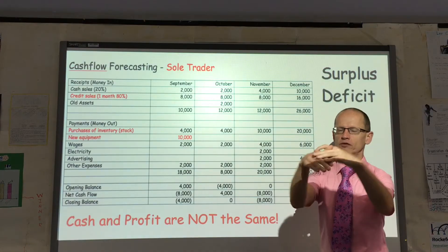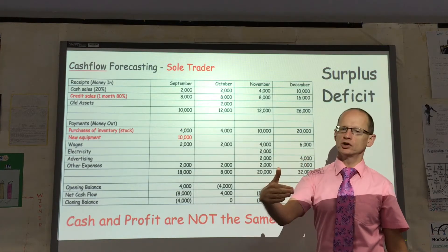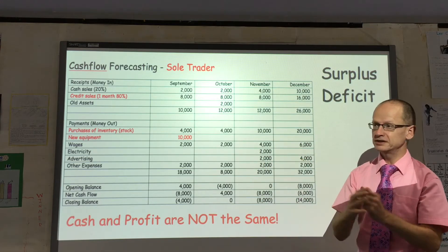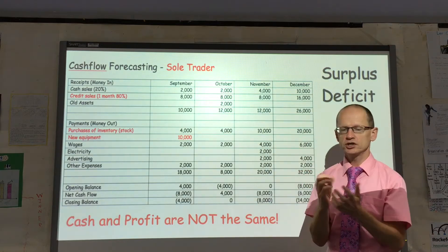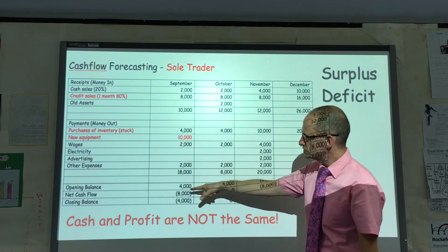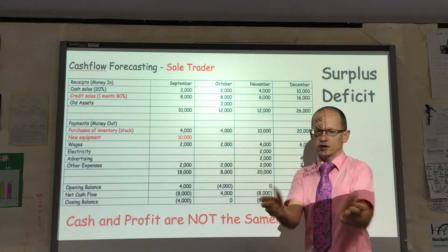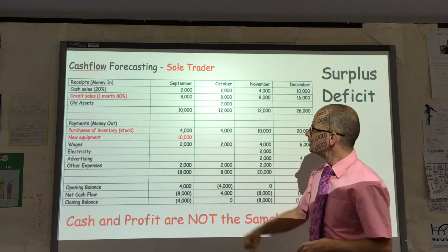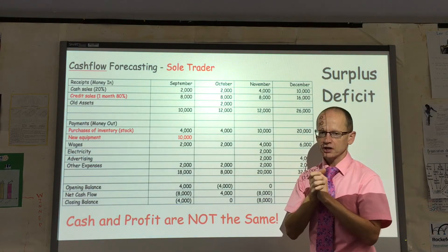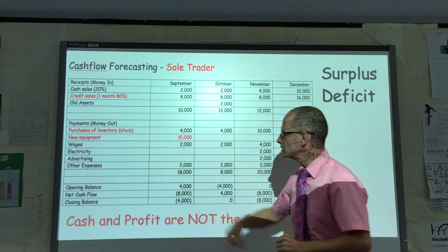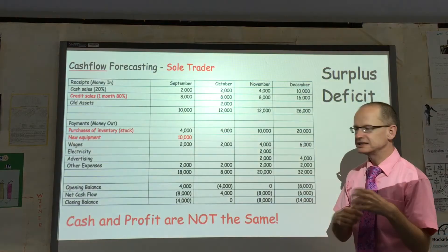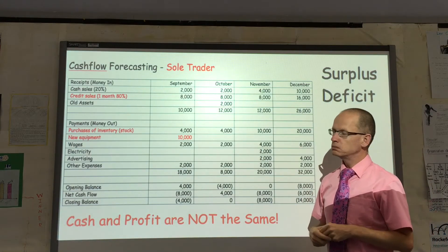Simply put, the cash forecast looks at all the cash in and all of the cash out. The profit and loss account doesn't. There are three simple ways in which we can show the difference. Each business starts the year with zero profit — every single business in the world starts with zero profit. You can see here this business starts with an opening balance of 4,000, so that's difference number one. Difference number two: when you sell old assets, that doesn't appear in the profit and loss account. And when you buy new assets, again, that doesn't appear in the profit and loss account. We will look at that in more detail in a different video.